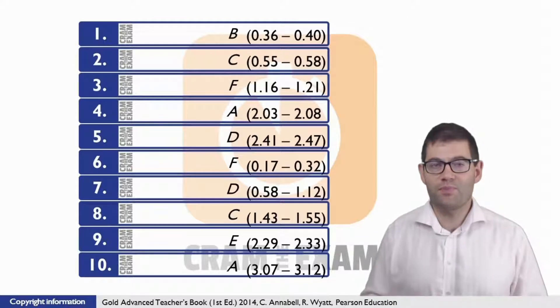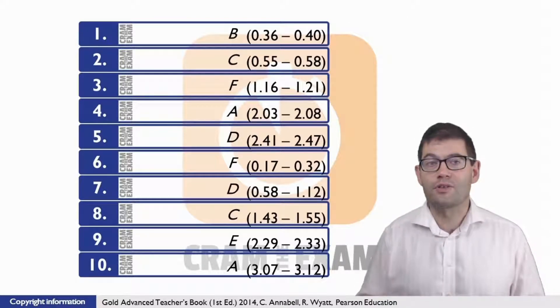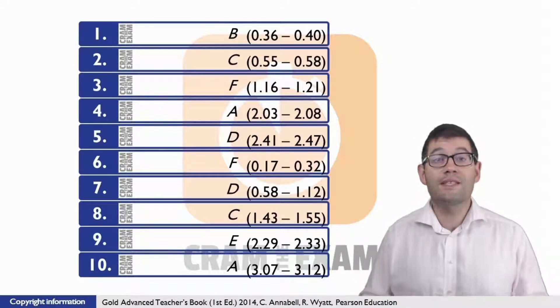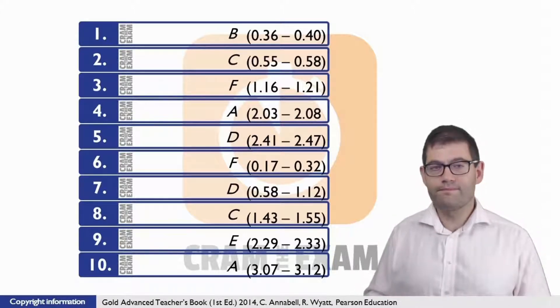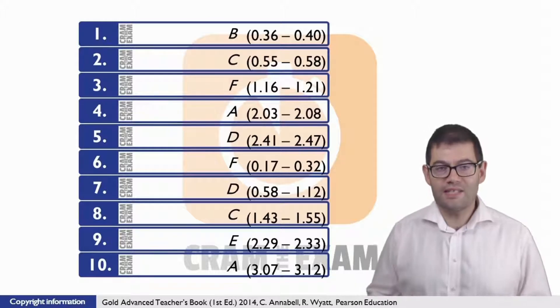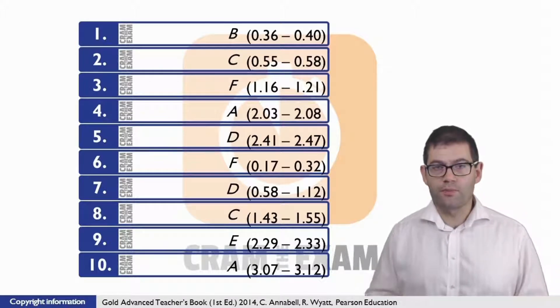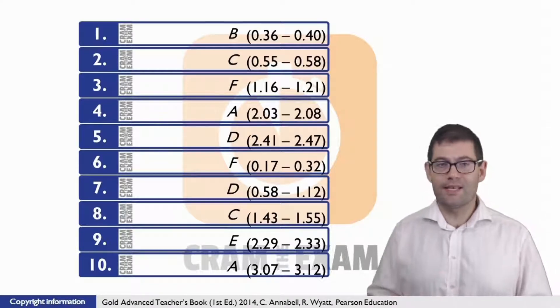For question one, the answer is B, making a spontaneous decision, because speaker one uses a phrase to say exactly that: 'I did the quiz on the spur of the moment.' For question two, the answer is C, having no other option, because speaker two says they said I had to do a personality test.